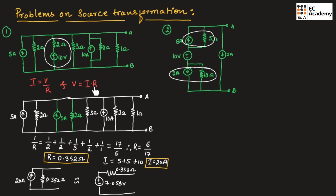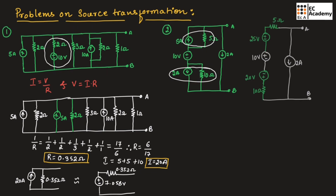To convert the current source into voltage source we need to multiply the resistor value with the current value. If we multiply 5 ohms by 5 amperes we get 25 volts, and if we multiply 10 by 2 amperes we get 20 volts. These resistor values should be connected in series with the voltage source. Let us redraw the circuit.